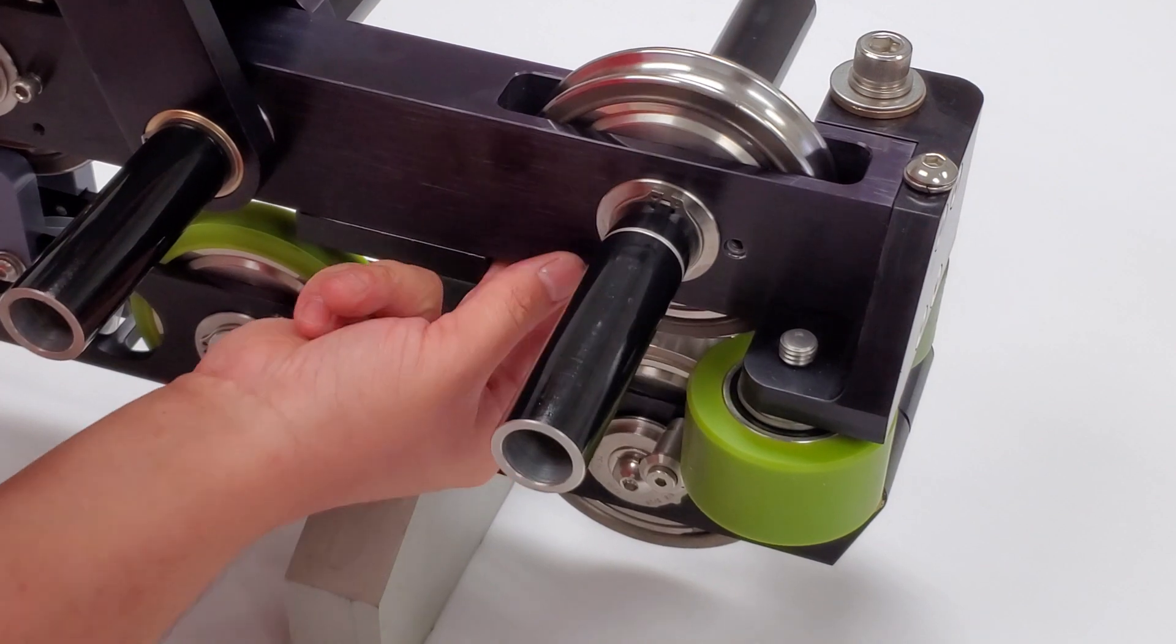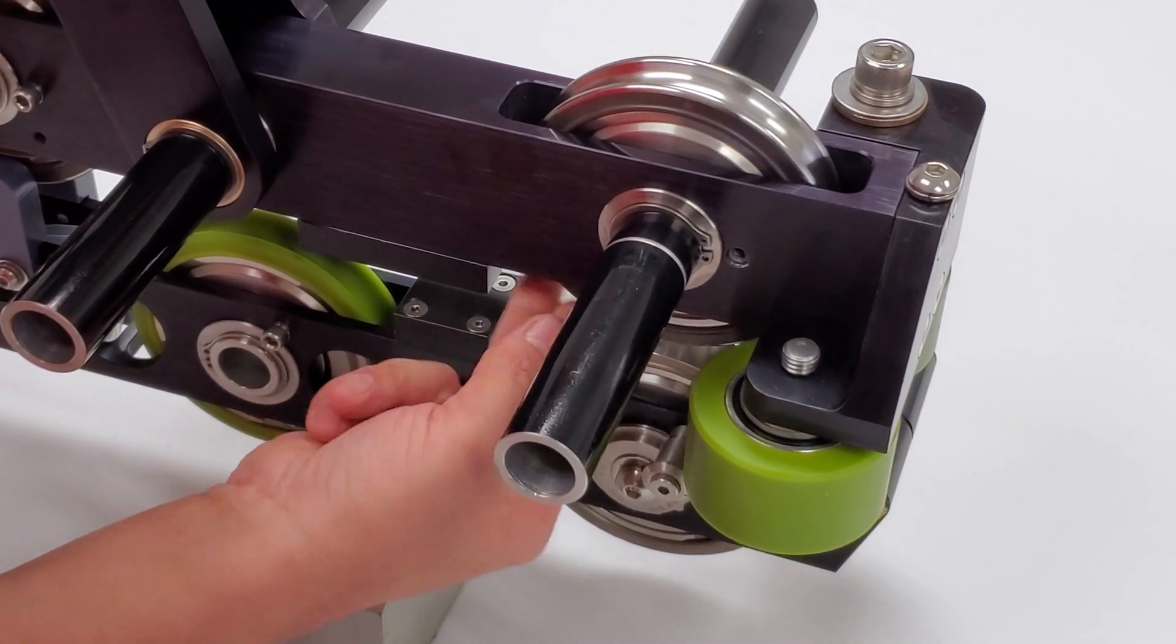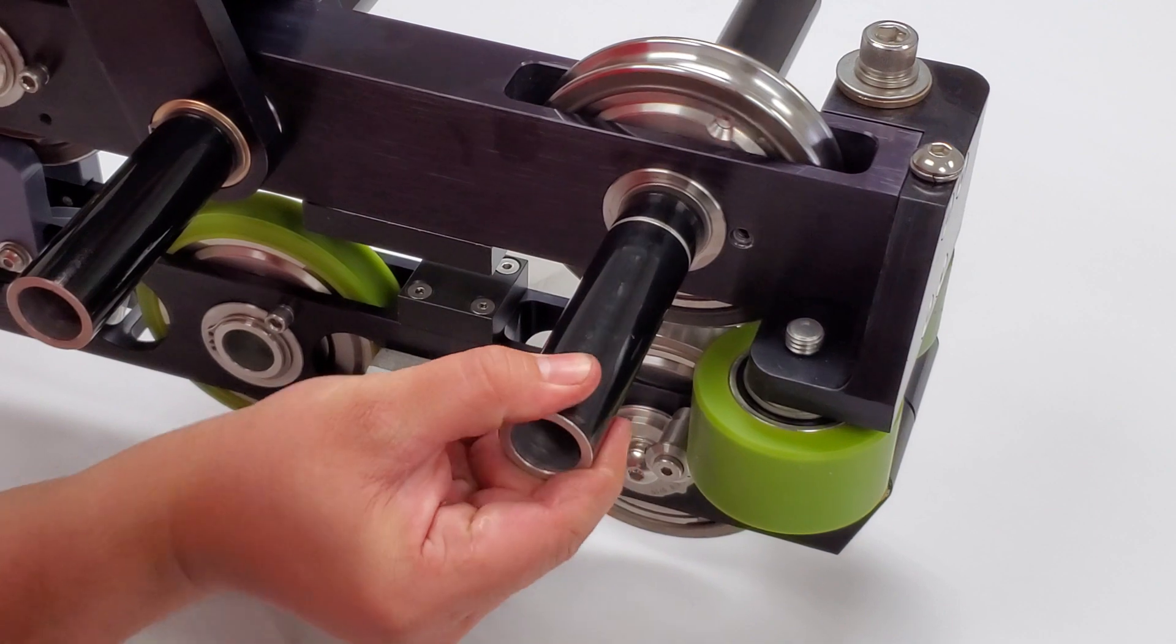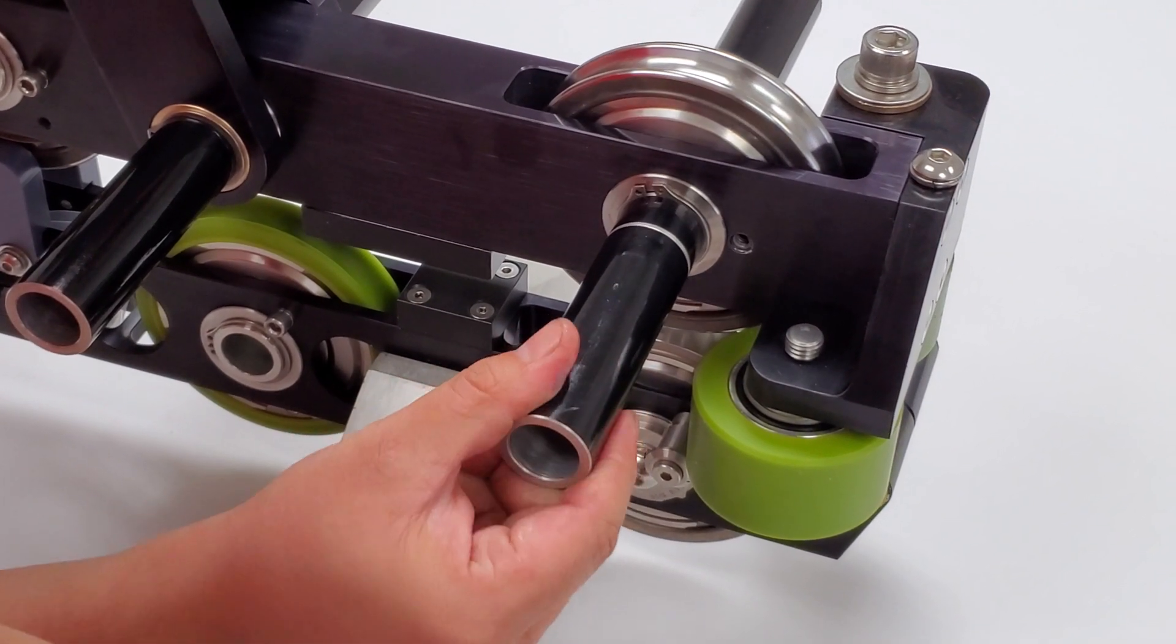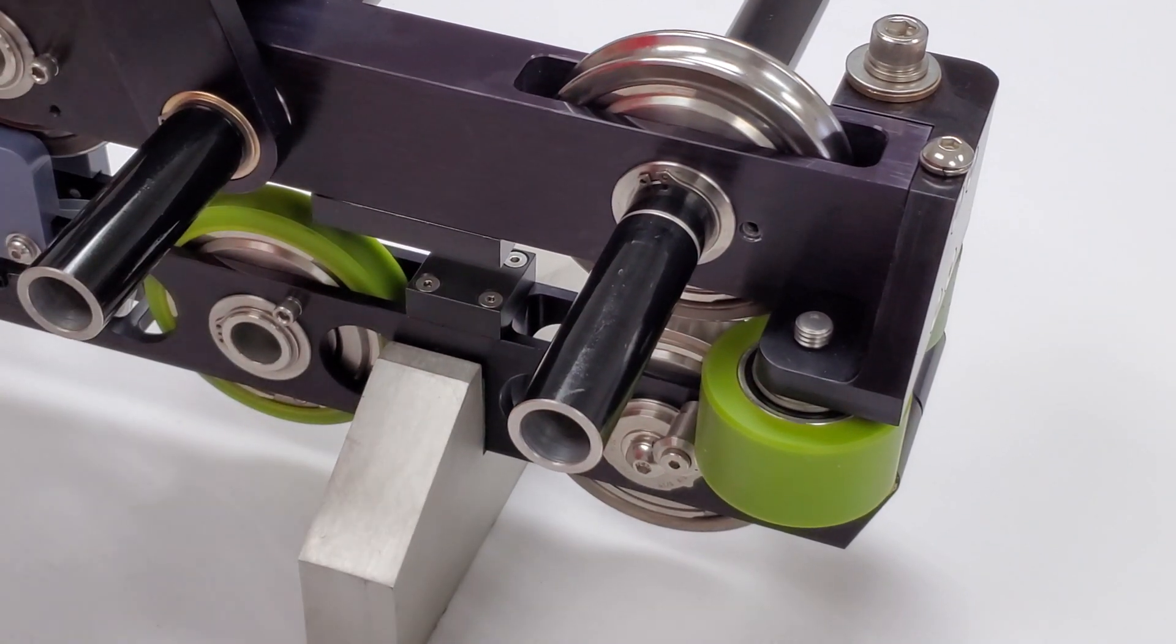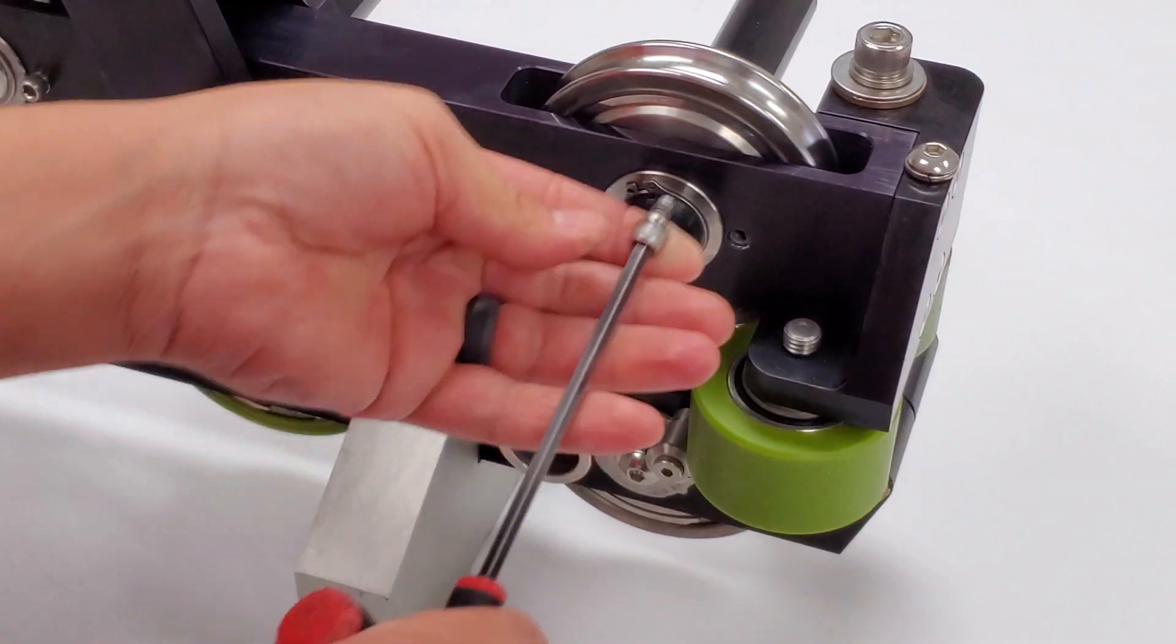Rotate the wheel so the slot in the bearing can be seen through the anti-rotation screw hole. Replace and tighten the anti-rotation screw.